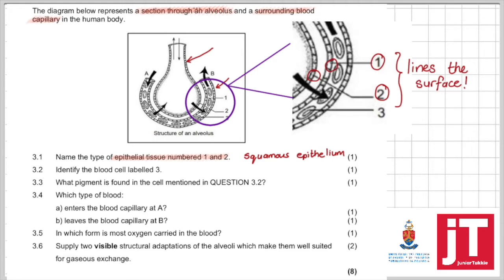Now it asks us to identify the blood cell labeled 3. So of the enlarged area over there we can see that we're looking at that, that being our red blood cell. So that's what I would write down, red blood cell or RBC.